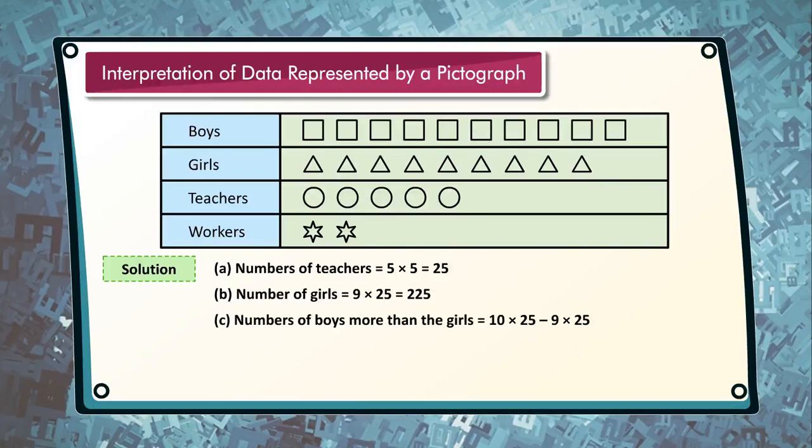10 into 25 minus 9 into 25 equals 250 minus 225 equals 25. Number of other workers equals 2 into 5 equals 10.